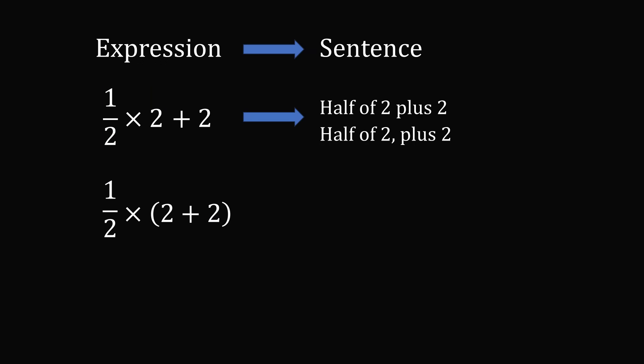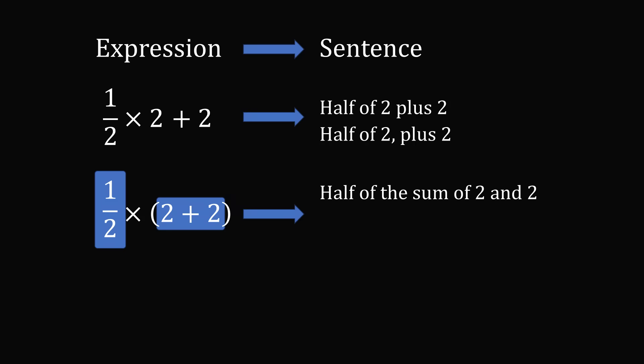Now let's take a look at the expression 1 half, and then we have a multiplication symbol, and we have parentheses 2 plus 2. How would you translate that into English? Well, we have 1 half, and then we have a group sum of 2 and 2. So I personally would translate this expression into the sentence, half of the sum of 2 and 2.